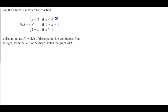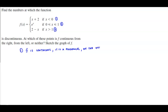So let's take a look at this in pieces. For the first piece, we know that f is continuous because it is a polynomial, x plus 2, on the interval from negative infinity to 0.